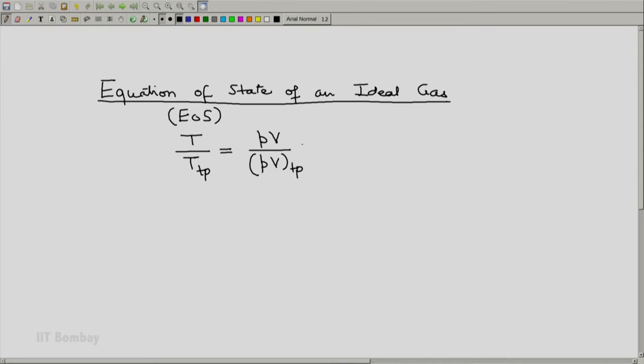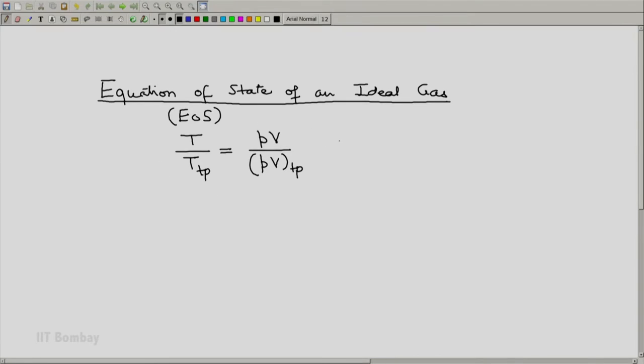Now for this scheme to work as an ideal gas Kelvin thermometer, we have to use an ideal gas as a working fluid. Let us say that we are looking at this behavior as specified by the ideal gas, and that itself gives us the equation of state of an ideal gas.